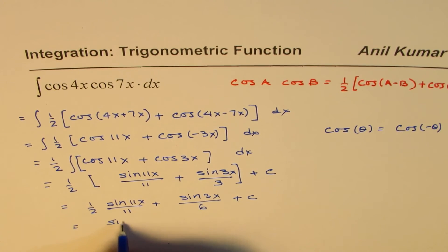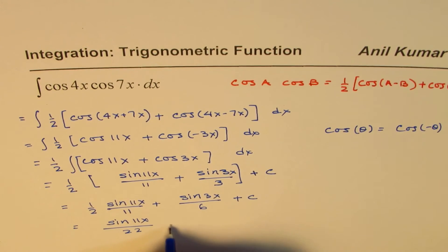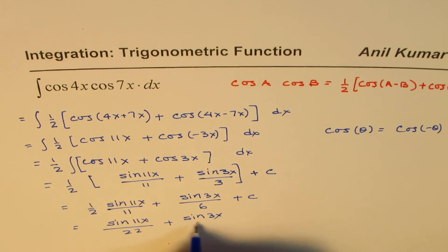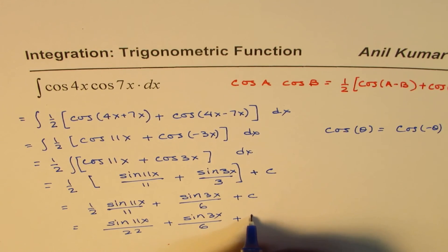we can write this as sin 11x divided by 22 plus sin 3x divided by 6 plus c.